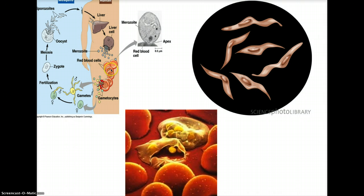To the left is a picture of the plasmodium life cycle, which can again be found on page 557 in the 6th edition. The image to the right is an example of a sporozoite. And at the bottom is an example of the merozoites bursting through the walls of a red blood cell, infecting the blood.